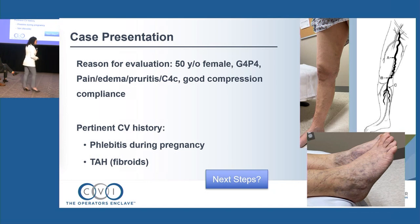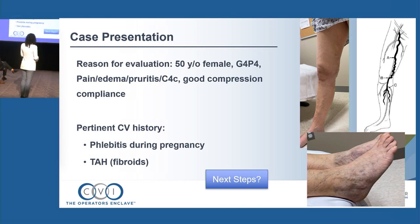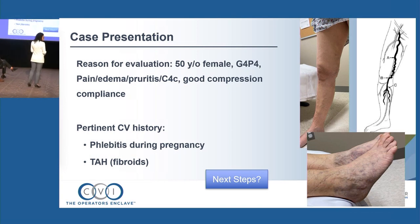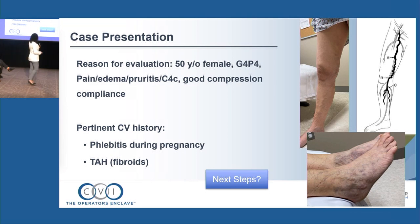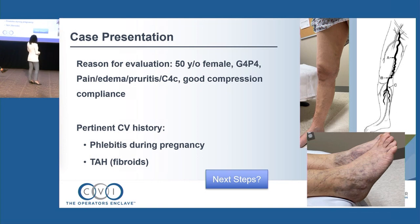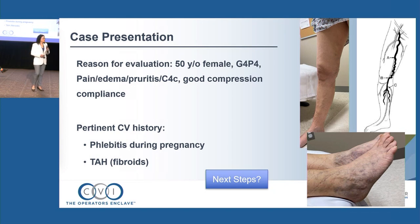One thing I want to prompt the audience to note is the image — the exam should always be done upright, with the patient standing, which gives a better sense of the venous disease pattern. I showed a magnified picture of corona phlebectatica on the medial malleolus of the contralateral leg, but she had the same finding ipsilaterally on the right side.